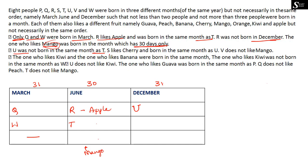The next clue says S likes Cherry and was born in the same month as U. Since U is in December, S must also be in December. Therefore S is placed in December and S likes Cherry.